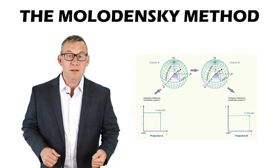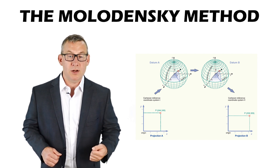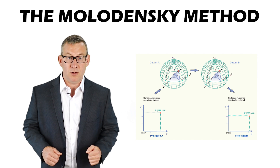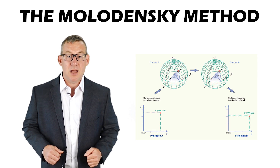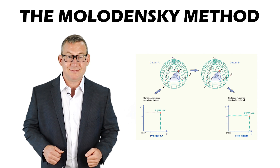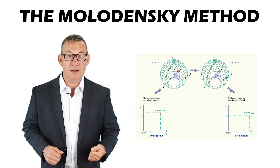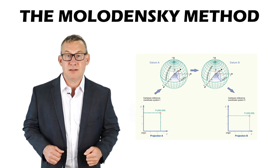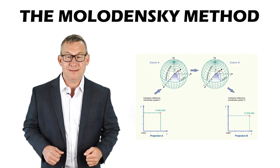The Molodenski method converts directly between two geographic coordinate systems without converting to a Cartesian coordinate model. It uses three or five parameters, performing three shifts — DX, DY, and DZ — and adjusts the semi-major axis and the flattening of the spheroid.